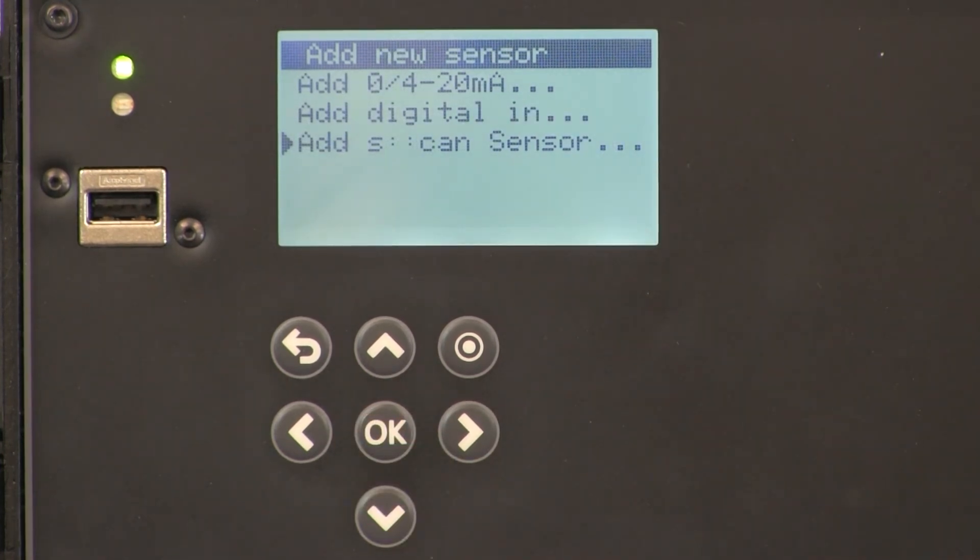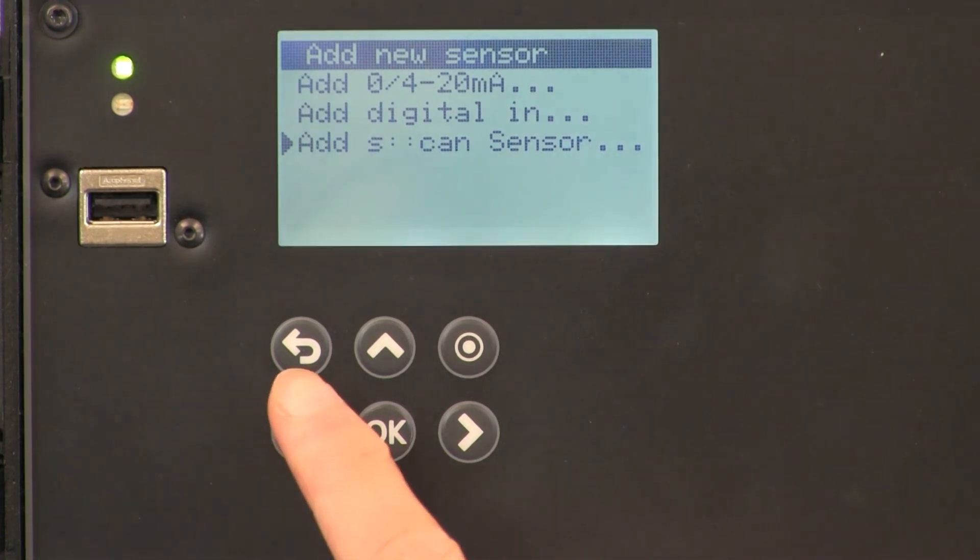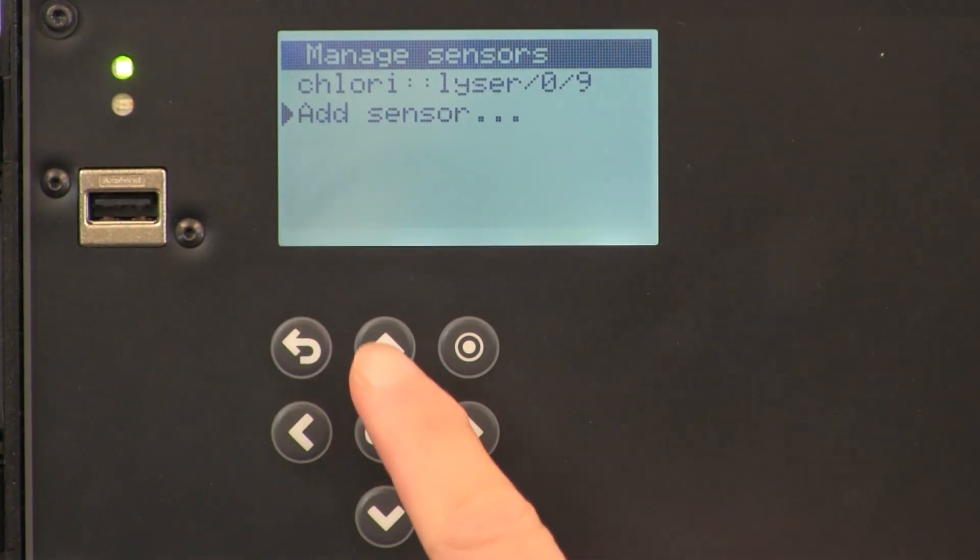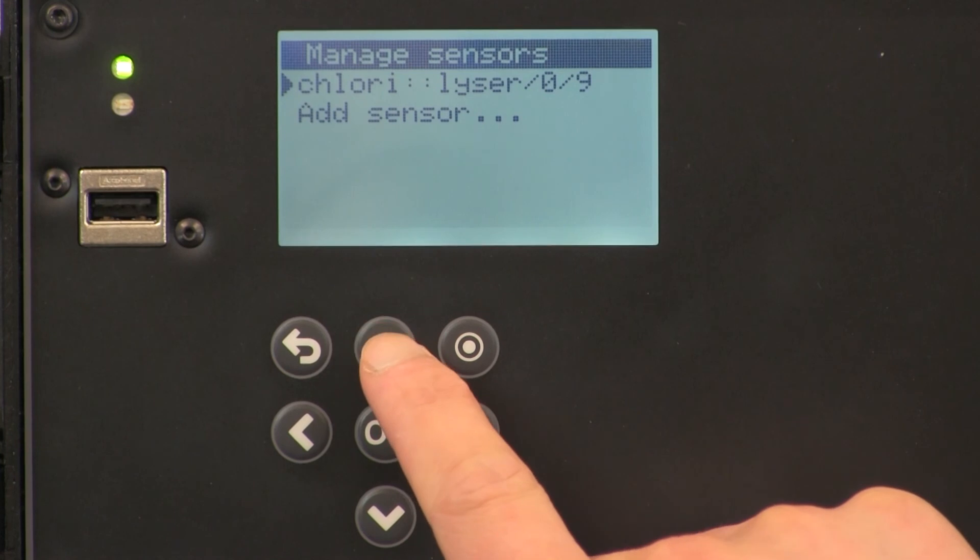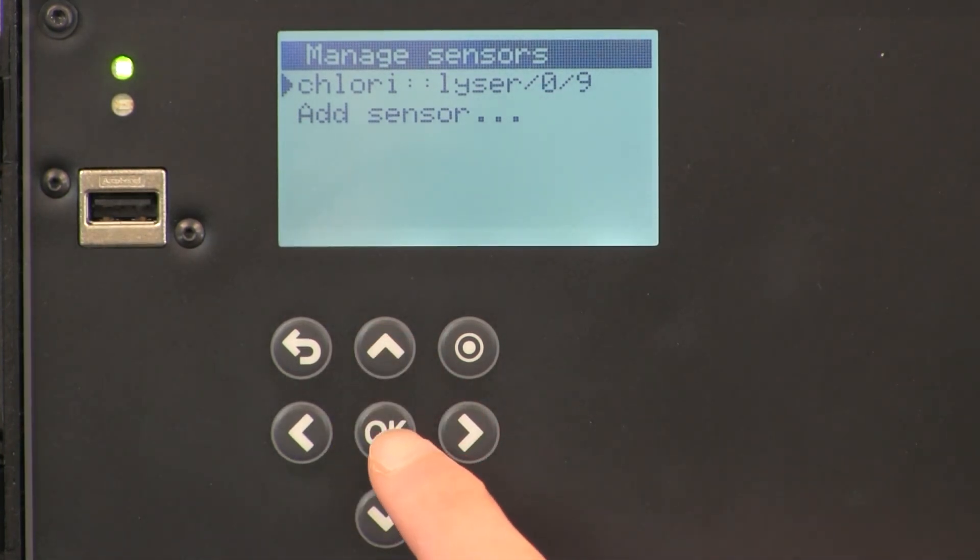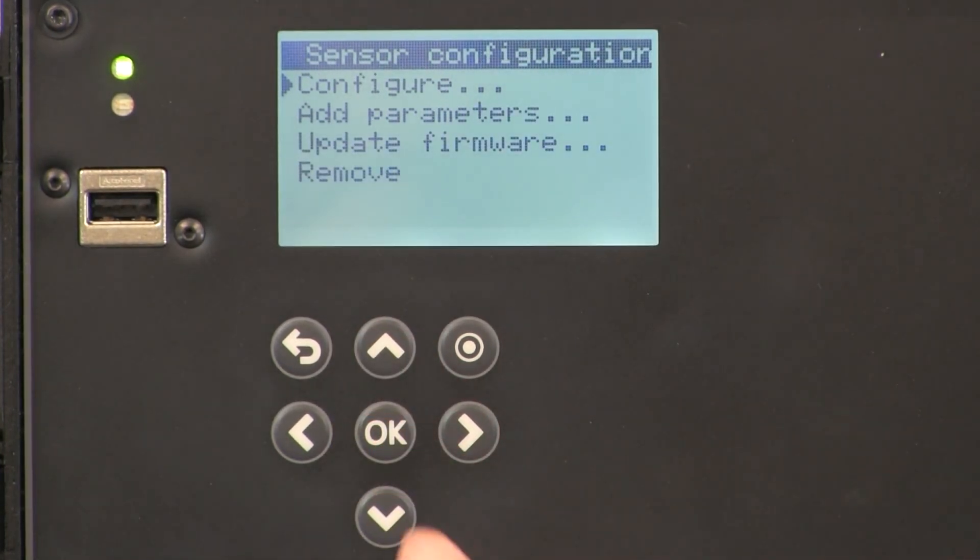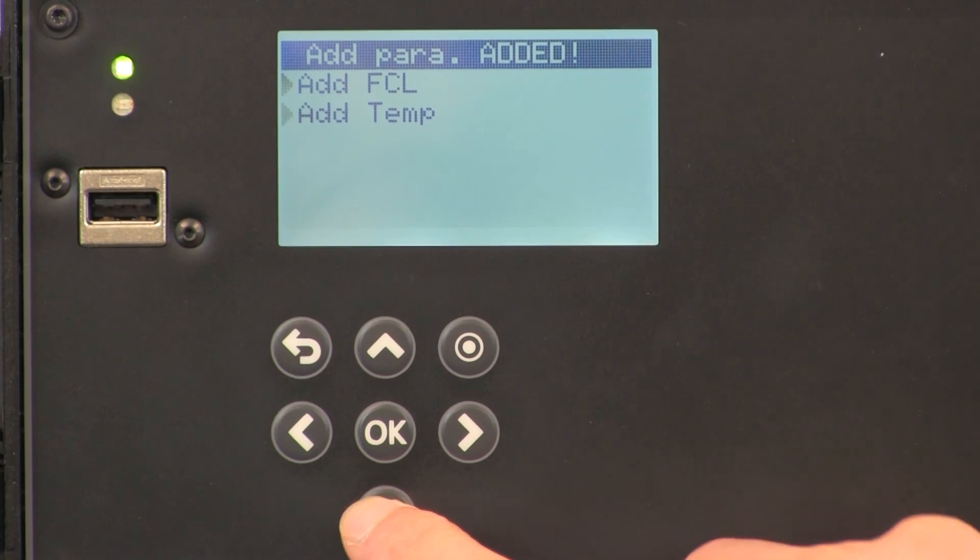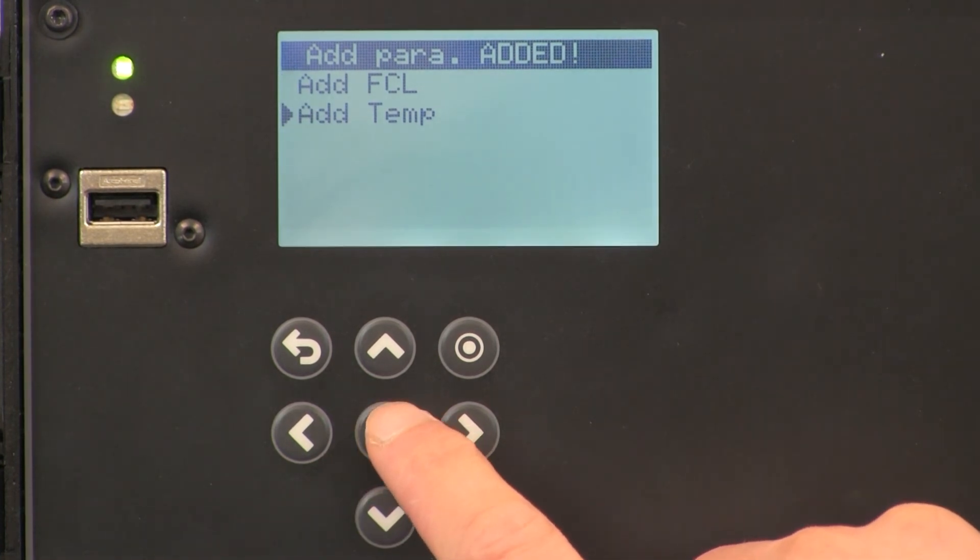Now we want to add the parameter of the sensor to the screen. So now we have to hit return, select up, and hit OK on the sensor. Select down to add parameter. Here we can add free chlorine, and also temperature, which is included with the same sensor.